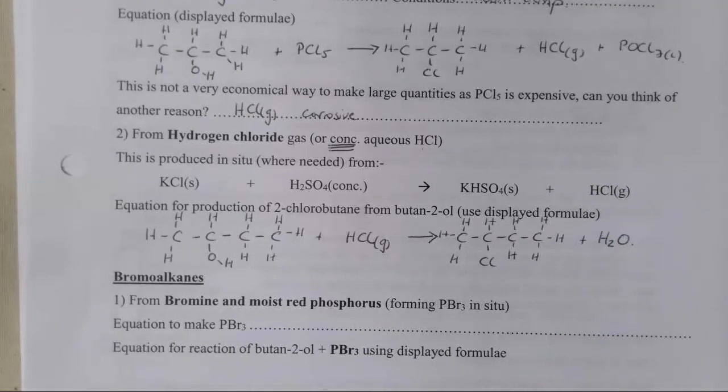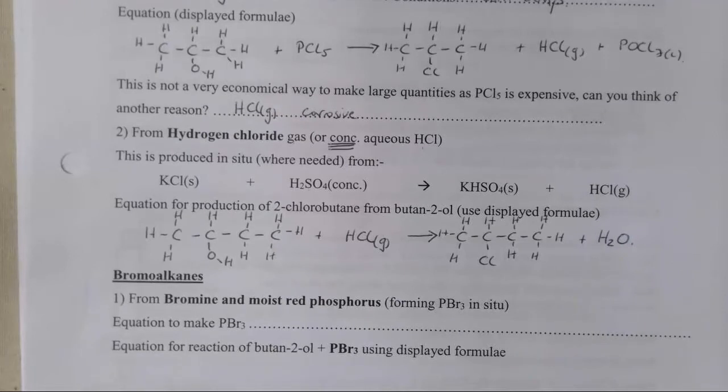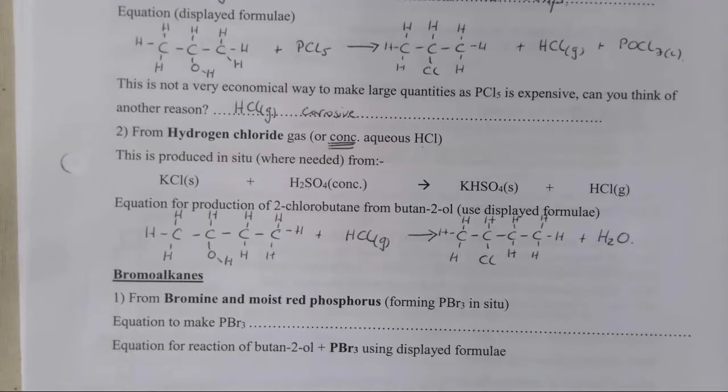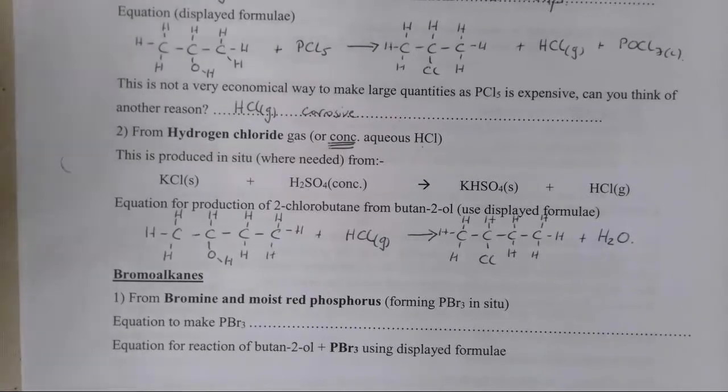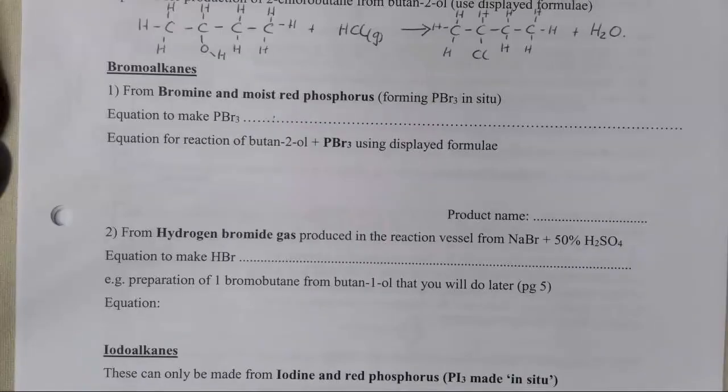Moving on to the bromoalkanes now. There are two ways I can make these. The first one is to make them using PBr3, which again, we form in situ. The equation to make PBr3, we make this in situ, is to react phosphorus and bromine to make PBr3.